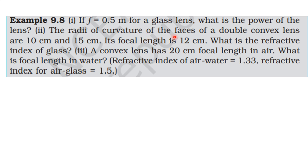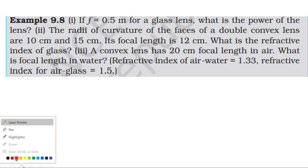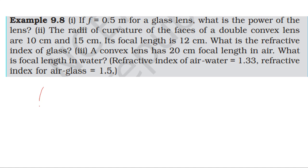For the second problem, we have a double convex lens with radii of curvature 10 cm and 15 cm, and focal length 12 cm. We need to find the refractive index. Drawing the convex lens with its principal axis, the first surface has a radius of curvature measured left to right, which is positive, so R1 equals plus 10 cm.